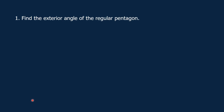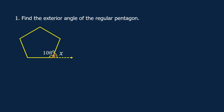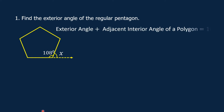Problem number 1: Find the exterior angle of the regular pentagon. This is the figure. The exterior angle of the regular pentagon is represented by x, and this is the adjacent interior angle of the polygon. We just said that exterior angle plus adjacent interior angle of a polygon is equal to 180 degrees. Therefore, x plus 108 degrees is equal to 180 degrees.